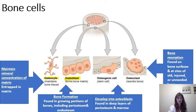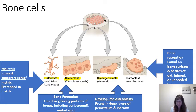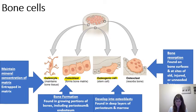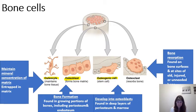Bone contains small numbers of mesenchymal stem cells referred to as osteogenic cells, or osteoprogenitor cells. These are squamous stem cells that produce daughter cells differentiating into osteoblasts. Osteoprogenitor cells maintain populations of osteoblasts important when bone breaks or cracks. They are located in the inner cellular layer of the periosteum and also in the endosteum inside the medullary cavity, as well as on the trabeculae of spongy bone.